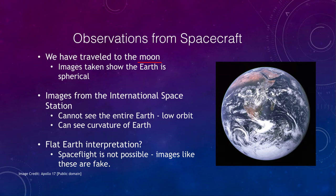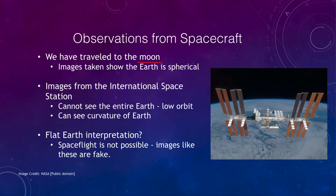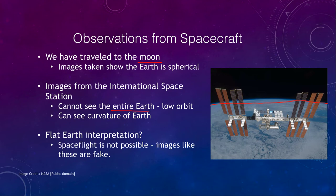We also have images from the International Space Station. When we look at those, we cannot see the entire earth — it is in a low orbit — but you can see the curvature of the earth off in the distance. We have images where we can see the entire space station, taken by one of the shuttles that was arriving or leaving the station, looking back to get an image of it.